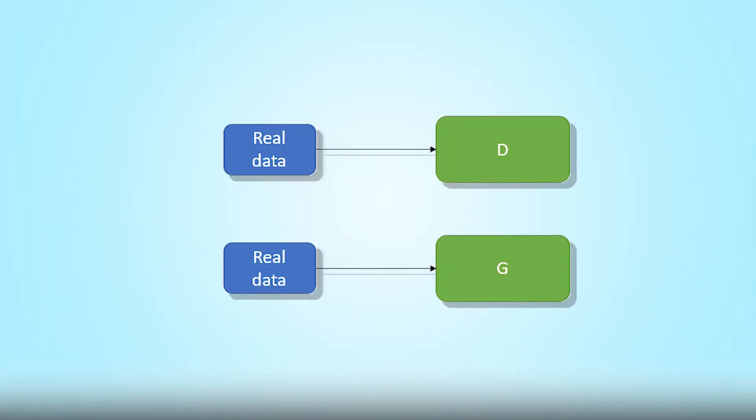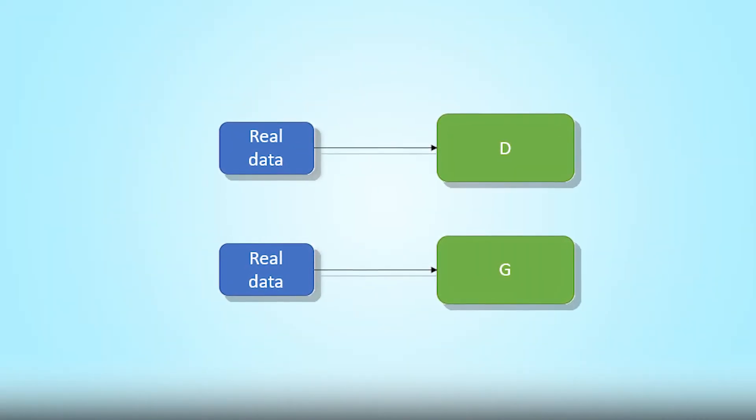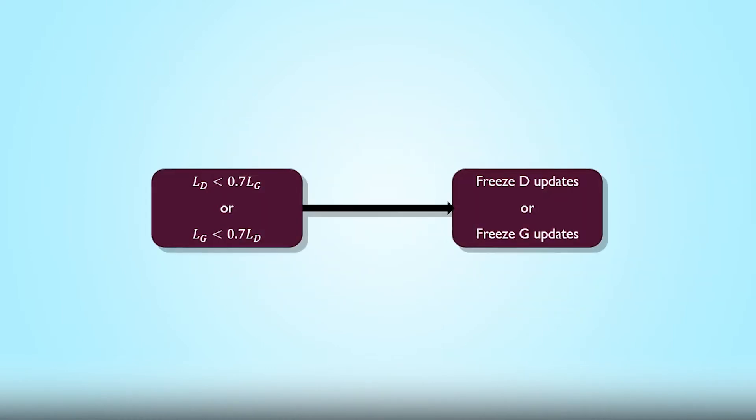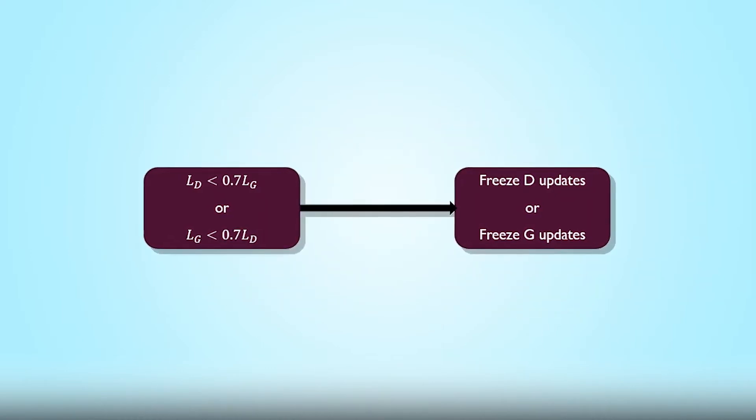As you can imagine, such a training process is quite volatile and arduous and takes quite a long time to converge. However, we can take a few steps to attempt to make it more efficient, faster, and more stable. Which is why we pre-train our models separately and directly on the training dataset for a few epochs. We also implement freezing to prevent G or D from getting too strong with regards to the other.